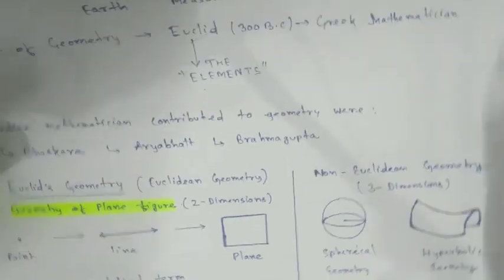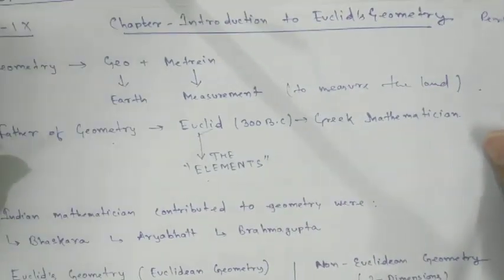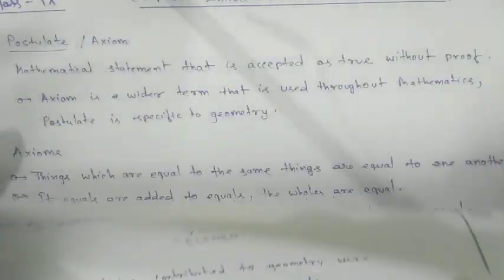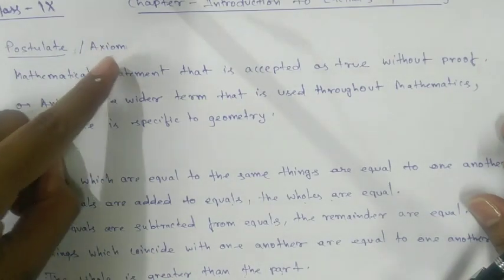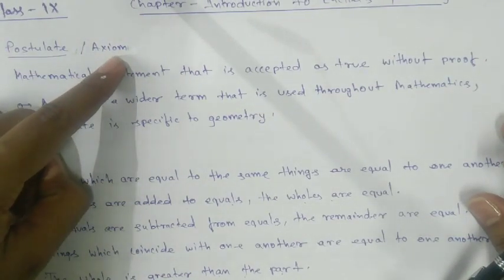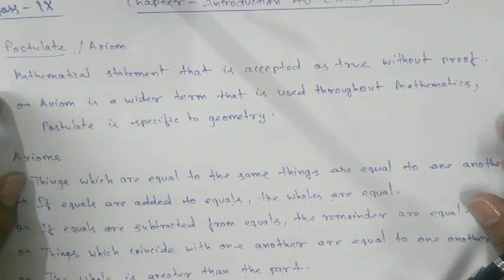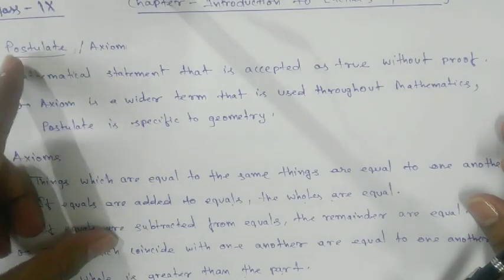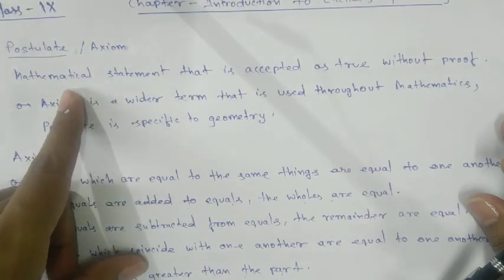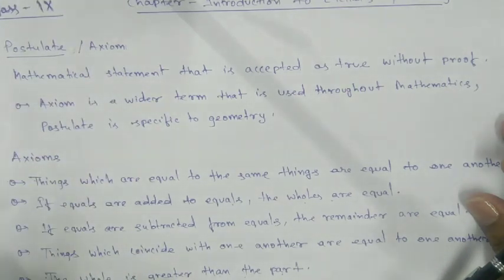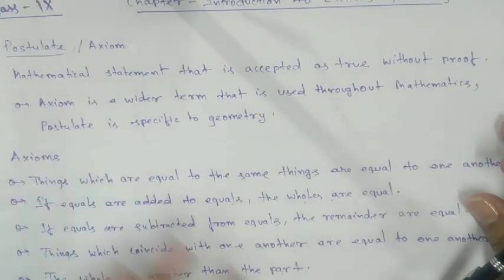In this chapter we will see three terms: one is postulate, another is axioms, and another is theorem. Postulate and axioms both have the same definition — a mathematical statement that is accepted as true without proof. There is no proof for them. Euclid said these are the things and you have to go with them without any proof.